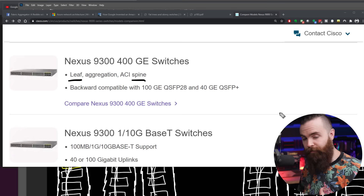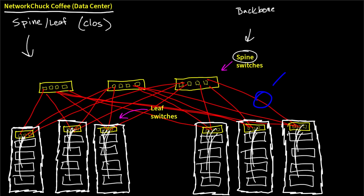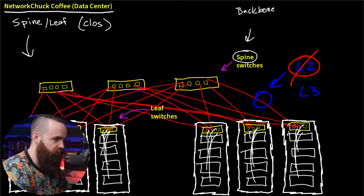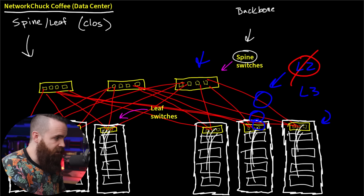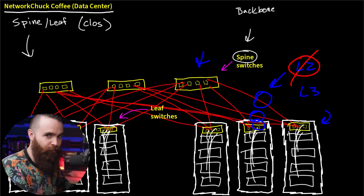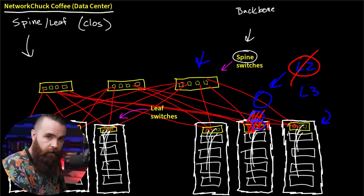One more important thing about the spine-leaf design: how these leaf switches are connected to the spine switches. This connection is most often not layer two - it's layer three. Layer three is routers dealing with IP addresses; layer two switches deal with MAC addresses. Typically when you connect two switches together, that's layer two, and that's a lot of what you'd see with a three-tier design. But these switch-to-switch connections are layer three, which means these are multi-layer switches. This does two things: first, we don't have to worry about spanning tree blocking any of these links. Second, we can load balance across these links, keeping them all up and using the full bandwidth.